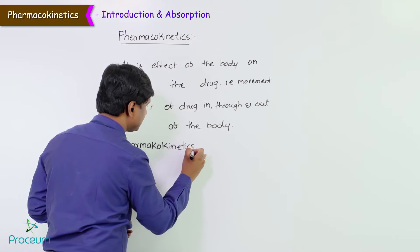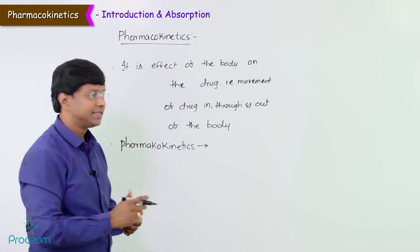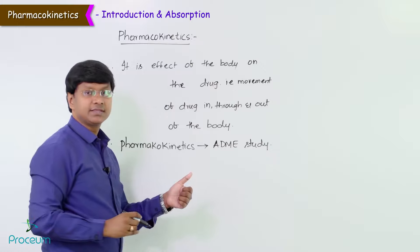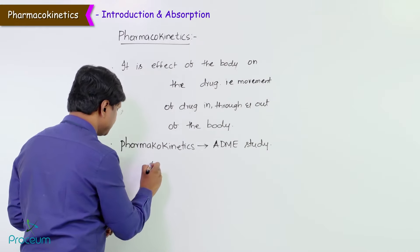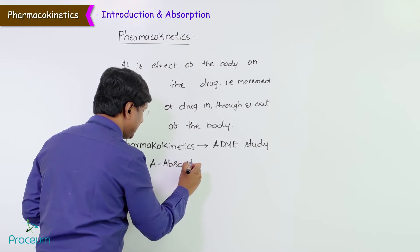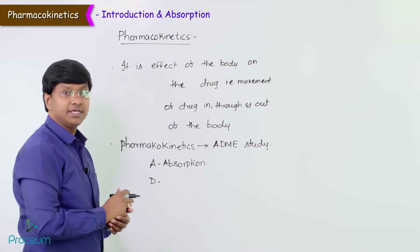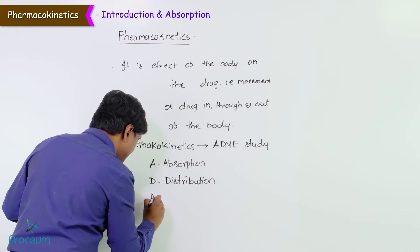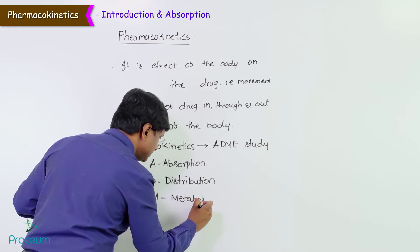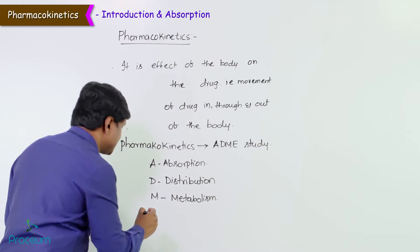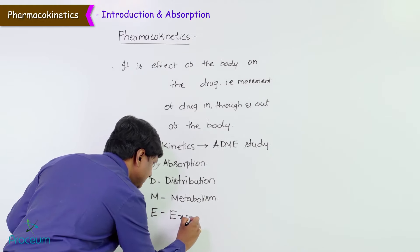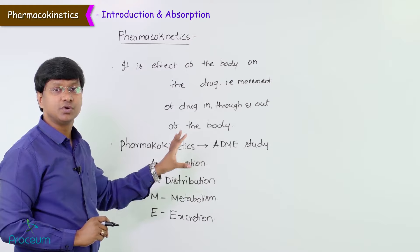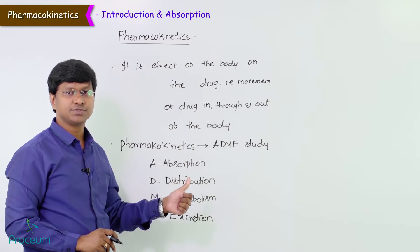Pharmacokinetics is also called the ADME study. The word A deals with absorption, D stands for distribution, M is metabolism of the drug, and E stands for excretion of the drug. So pharmacokinetics deals with absorption, distribution, metabolism, and excretion.